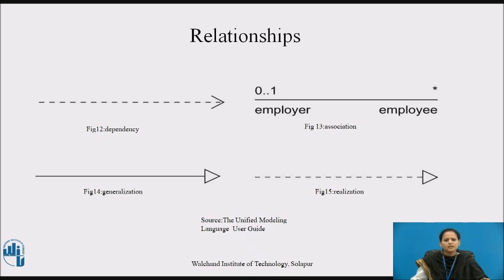A realization is a semantic relationship between classifiers wherein one classifier specifies a contract that another classifier guarantees to carry out. We will encounter realization relationships in two places: between interfaces and the classes or components that realize them, and between use cases and the classes or components that realize them. Graphically, a realization relationship is rendered as a cross between a generalization and a dependency relationship, as shown in figure 15.